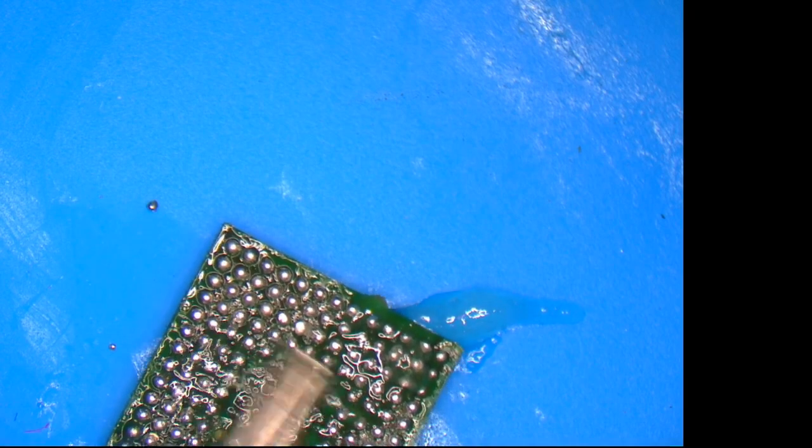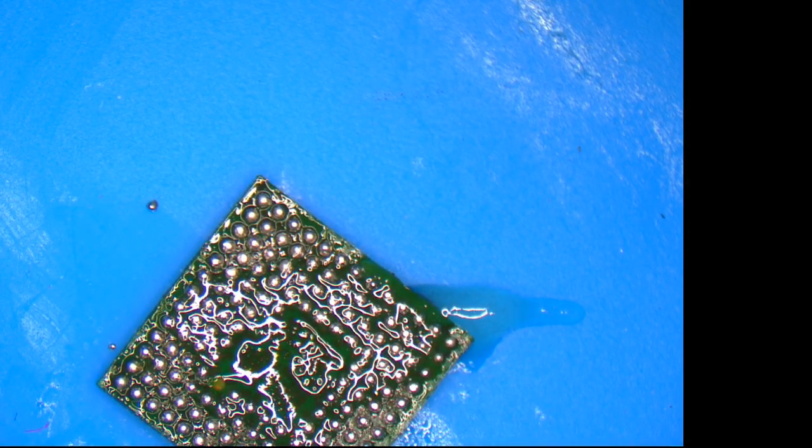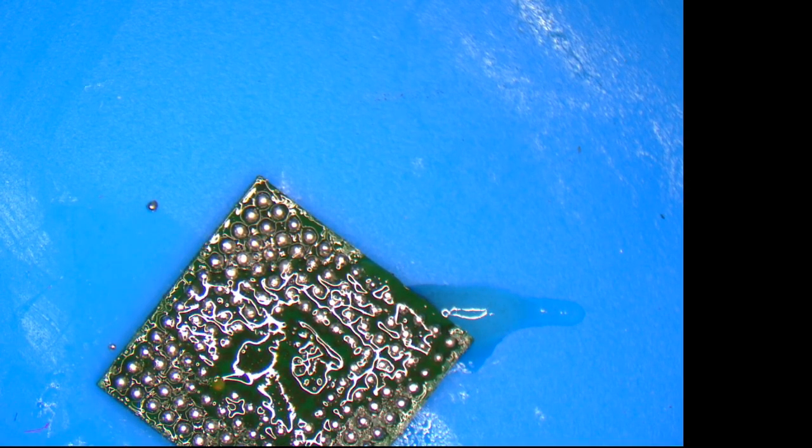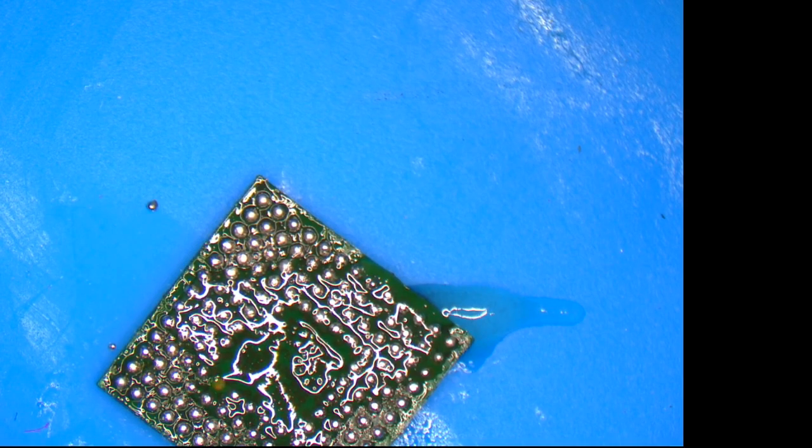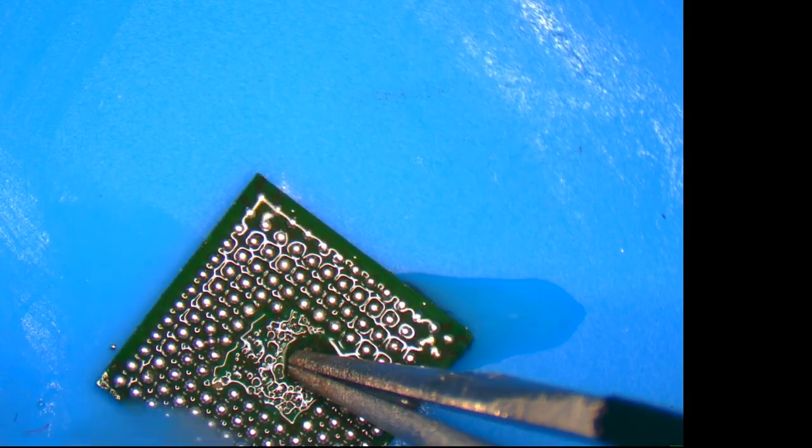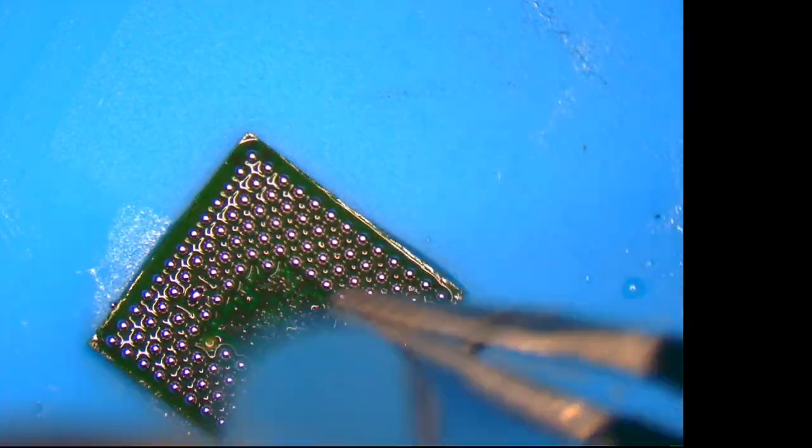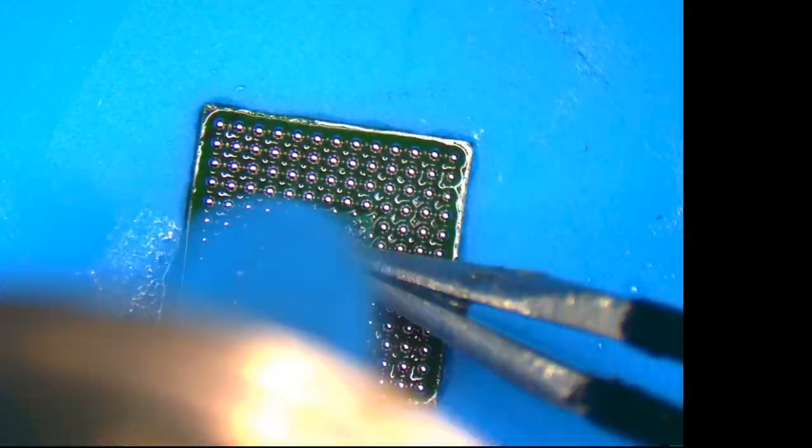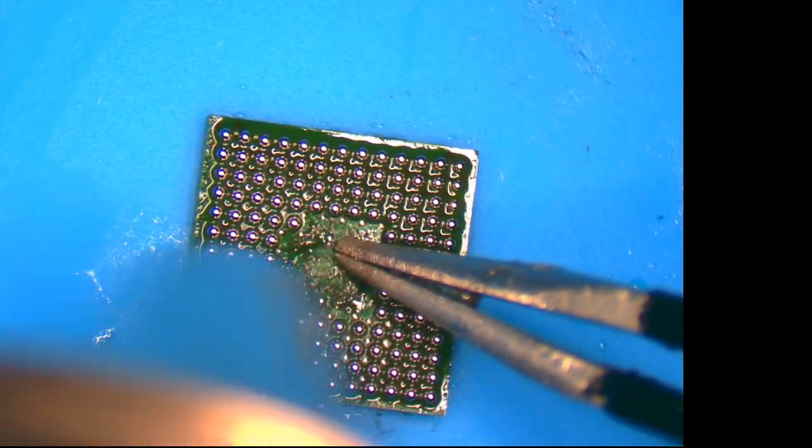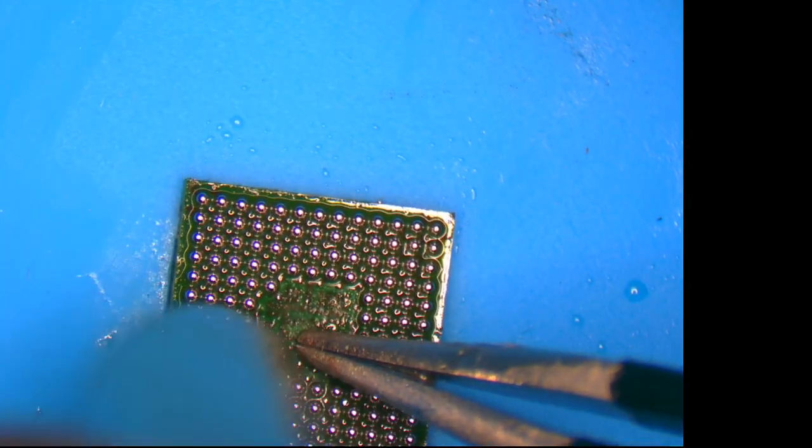Let's get a bit of flux on there. Heat those up again, move it around a bit. Turn nice. We've got one ball missing there, we can do that, we've got some solder balls that we can do that with. It's not a problem.